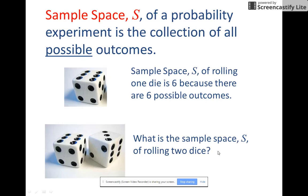Now, we need to learn a new term, sample space, or S. Of a probability experiment is the collection of all possible outcomes. So if you were to throw a die, just one die here, the sample space of rolling one die is six because there's six possible outcomes.